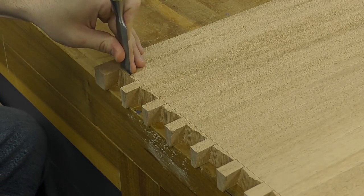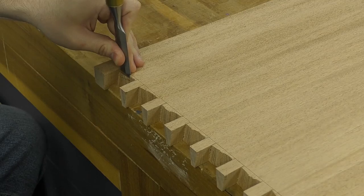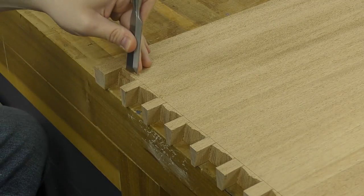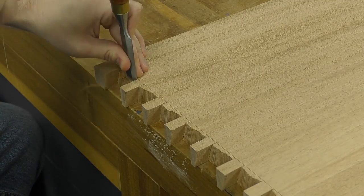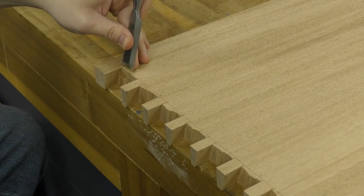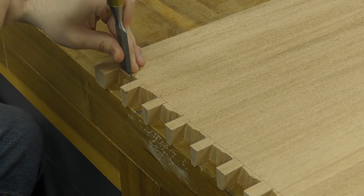Now chiseling away the waste on the pin board is a little different. The walls are at the angle of the dovetails so I angle my chisel when removing the waste. And like before, I chisel half the thickness of the board, flip it over, and remove the rest.